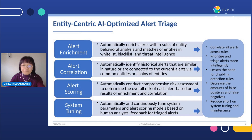The application conducts a machine learning-based risk assessment over the enriched and correlated alerts to determine the overall risk of each alert. Alerts are ranked according to their overall risk scores, which decreases both false positives and false negatives. To further reduce false positives and human effort on system tuning, the application includes an auto-tune feature that continuously updates system parameters and alert scoring models based on positive and negative feedback provided by security analysts.